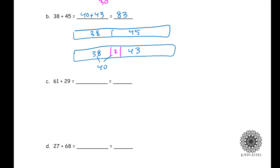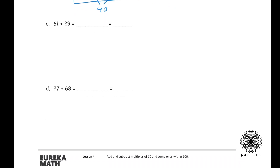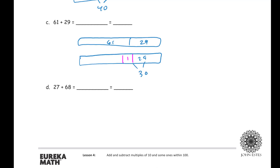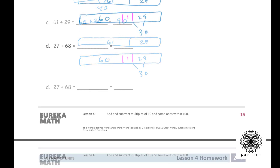Part C: 61 plus 29. I draw my tape diagram with 61 and 29. Trying to get to a multiple of 10, it's kind of a tie which one's closer. I move one person over from the 61 to go with the 29, so that becomes 30, and what's left on the other side is 60. Now I have 60 plus 30, which equals 90.